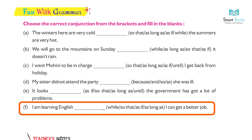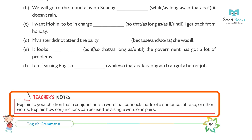He is a fine singer although he is so small. Fun with grammar — choose the correct conjunction: (a) The winters here are very cold while the summers are very hot. (b) We will go to the mountains on Sunday as long as it doesn't rain. (c) I want Mohini to be in charge until I get back from holiday. (d) My sister did not attend the party because she was ill. (e) It looks as if the government has a lot of problems. (f) I am learning English so that I can get a better job. Teacher's note: explain to your children that a conjunction is a word that connects parts of a sentence, phrase, or other words, and how conjunctions can be used as a single word or in pairs.